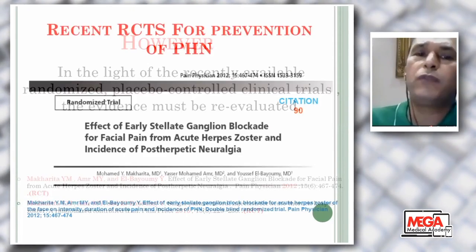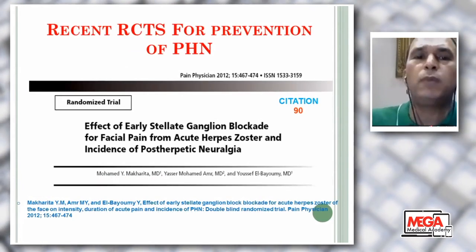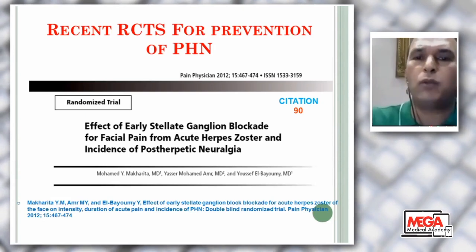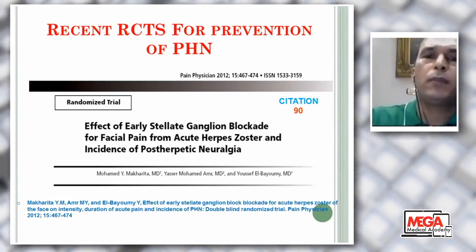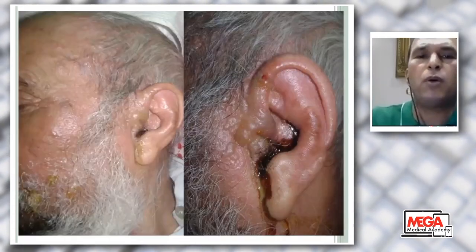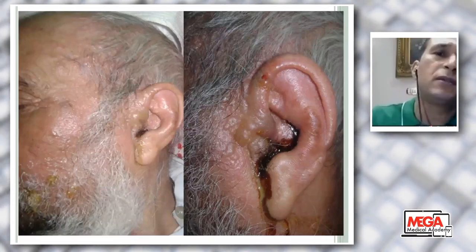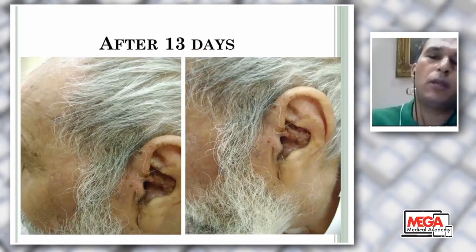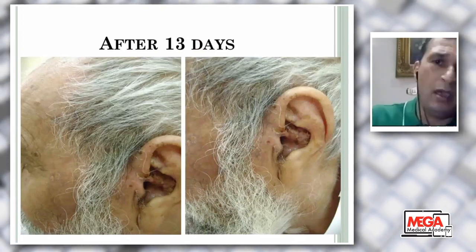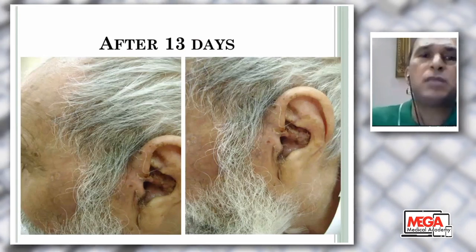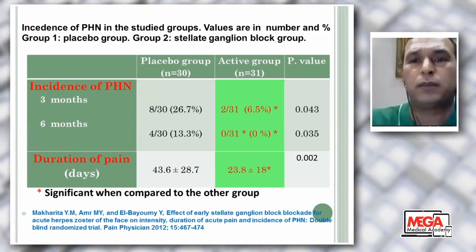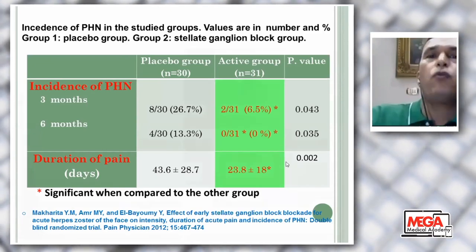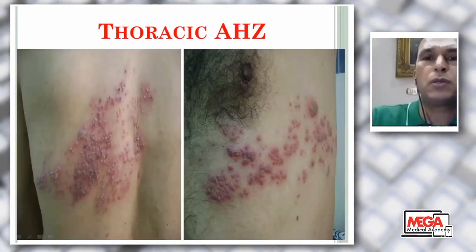Recent studies include the effect of early stellate ganglion block on facial herpes zoster and prevention of post-herpetic neuralgia — from the Egyptian team at Tanta and Mansoura Universities by my colleagues and myself. This is the stellate ganglion block. After certain days there is improvement of pain, no sequelae like post-herpetic neuralgia, no facial palsy or hearing loss. The incidence of post-herpetic neuralgia in the active group was significantly reduced after three and six months, and the duration of pain was also significantly reduced.